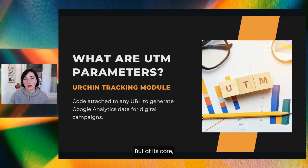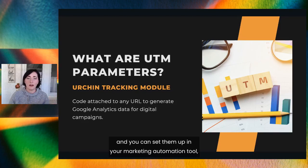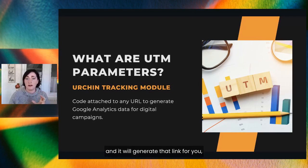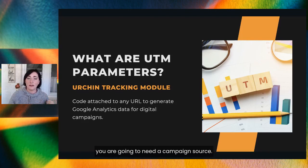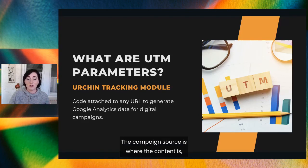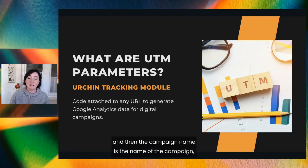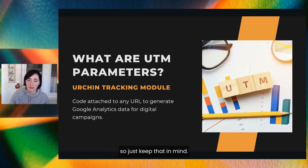At its basic, you're going to need a campaign source — that's where the content is, such as a newsletter, ads, or social media. The campaign medium is the type of media used, for example a display ad or social media post. And the campaign name is simply the name of the campaign. One really important best practice to keep in mind: UTM codes are case sensitive, so just keep that in mind.